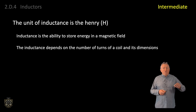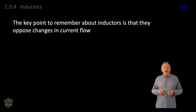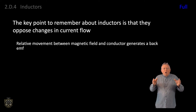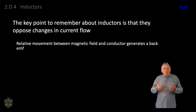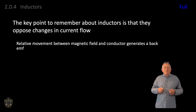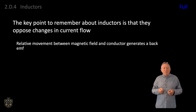Moving on to full licence level. A key point to remember about inductors is that they oppose changes in current flow. At the instant that a DC source is applied to an inductor, a magnetic field starts to grow which cuts the inductor itself. This relative movement between the magnetic field and the conductor generates a back EMF which opposes the growth of the current, which therefore only gradually rises to the maximum value — contrast this with a DC voltage applied to a resistor where the current instantly reaches the maximum value.